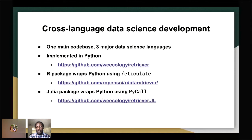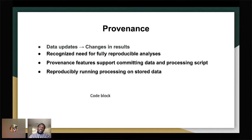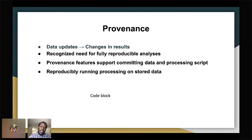If you're using any of these languages, you can have the same functionality in any of them. When processing data and dealing with data science workflows, we always have the problem of reproducing an analysis we did in the past. The R Data Retriever has that functionality — it gives you a snapshot of an analysis you did, with the code and recipes all packaged together, similar to how git versioning works, but for your whole reproducible pipeline.